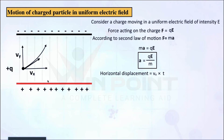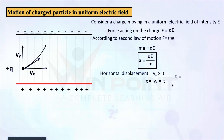Horizontal displacement means displacement in the x direction, so x equal to Vx into t. From here, we can make an equation for time: t equal to x by Vx.